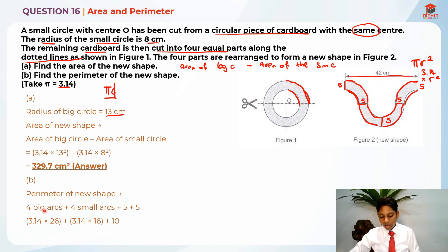So this is basically the circumference of the big circle because it's four big arcs makes one circle. So 3.14 times 26, which is basically 13 times two because diameter is basically two times of the radius plus 3.14 times 16 because diameter is two times of the radius. In this case, eight times two plus the 10. And this should give us our perimeter of the new shape. So it actually gives us 141.88 cm as the answer.